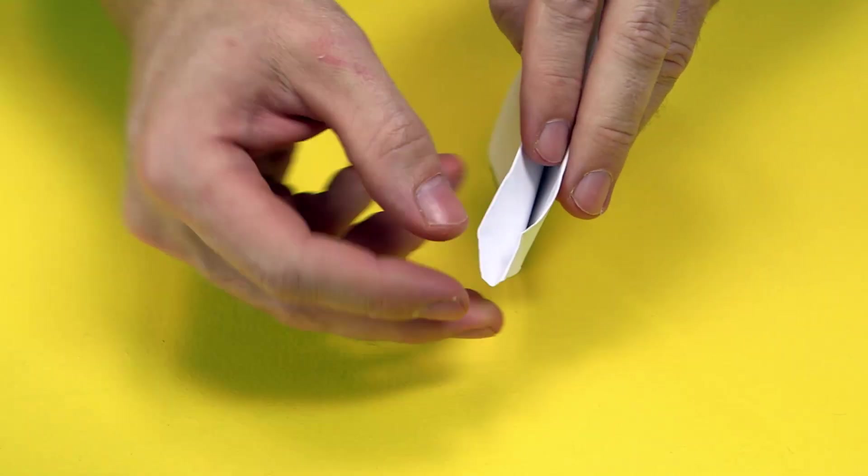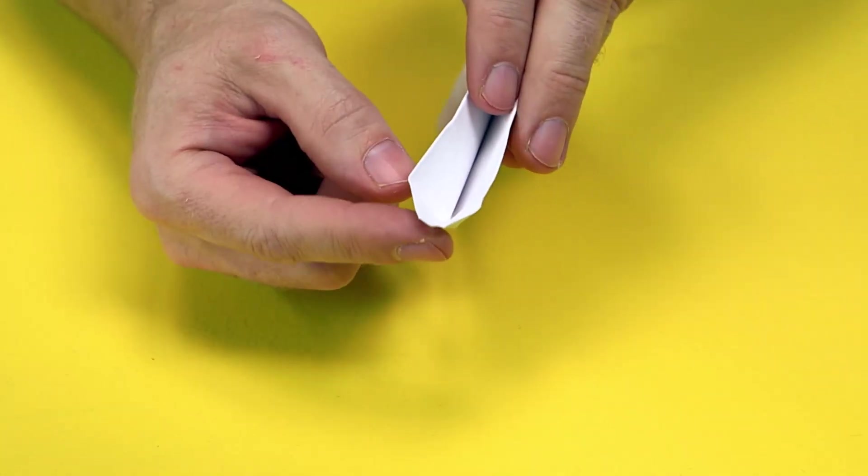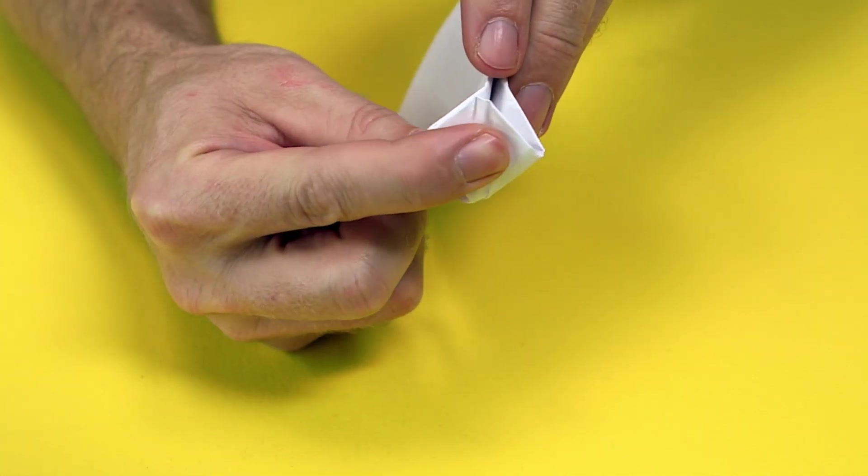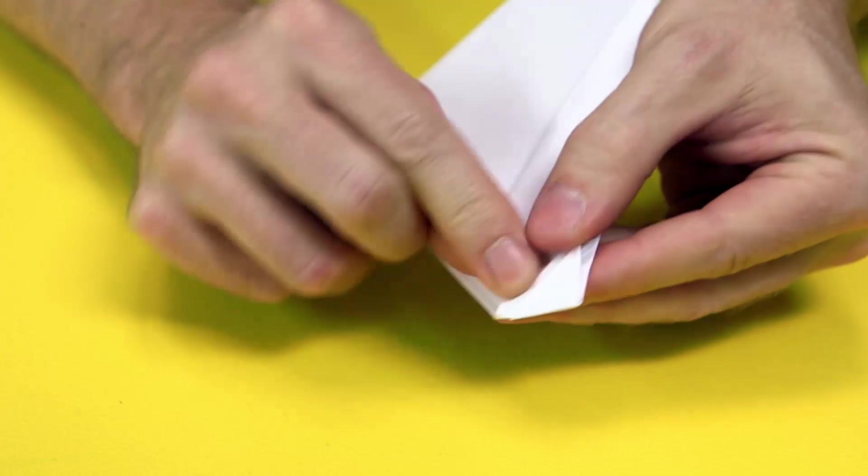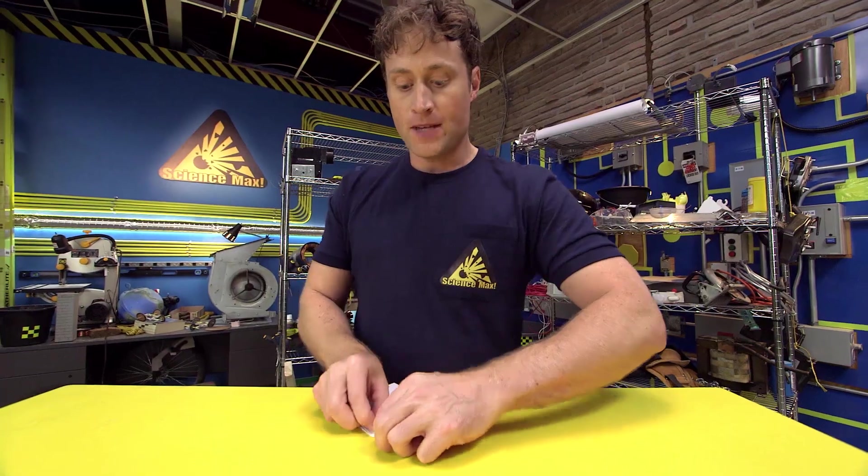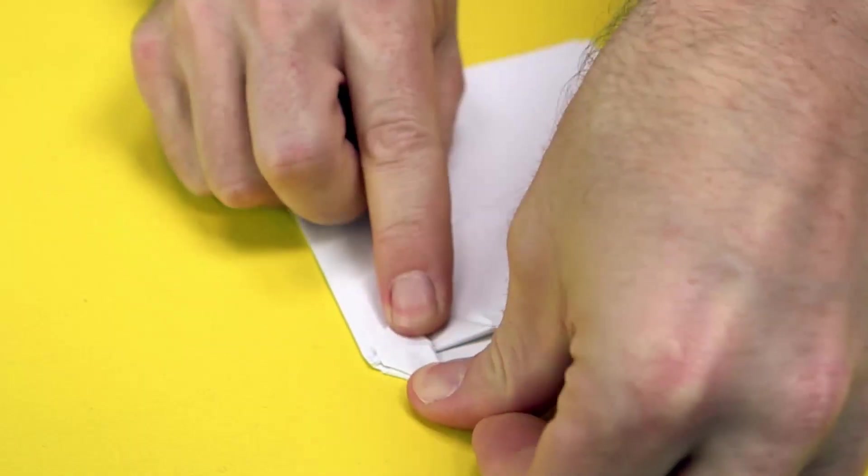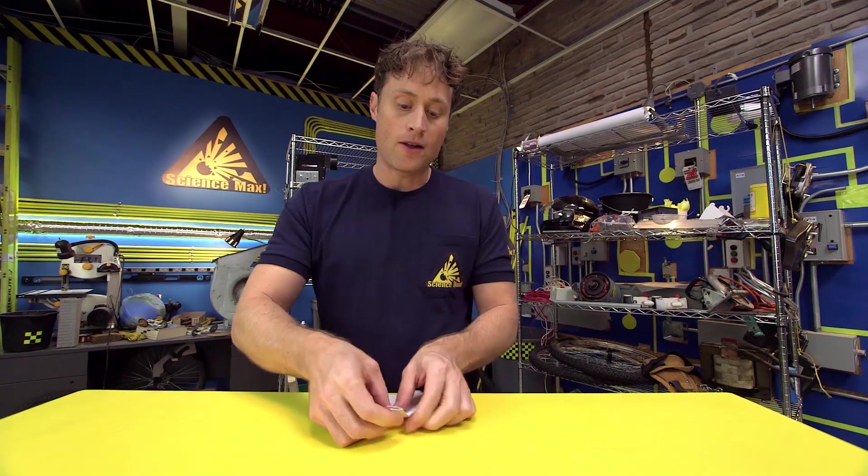Push it open like this. And this is called a pocket fold because you wanna make a little pocket and push it up against there. Fold it flat like this. Fold this tip down over there like that. Then fold it around the backside.